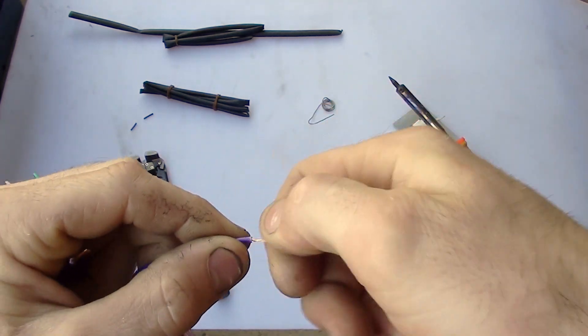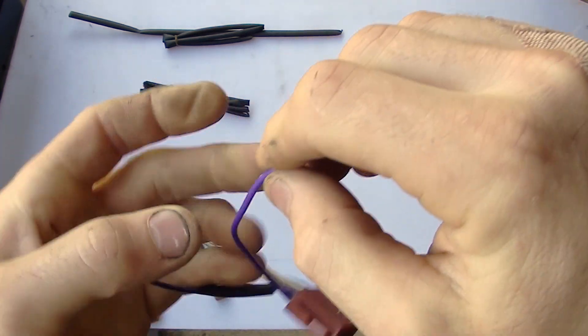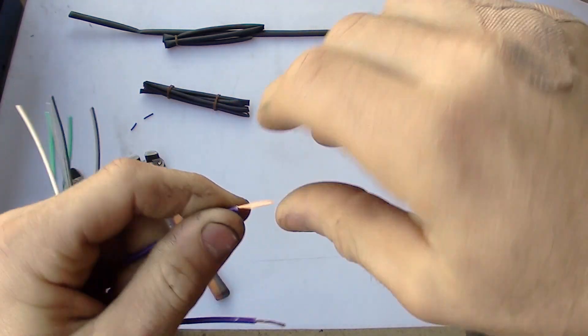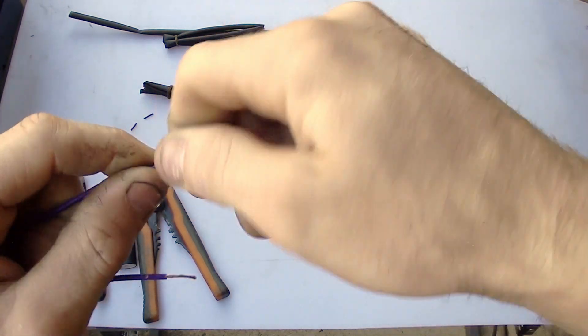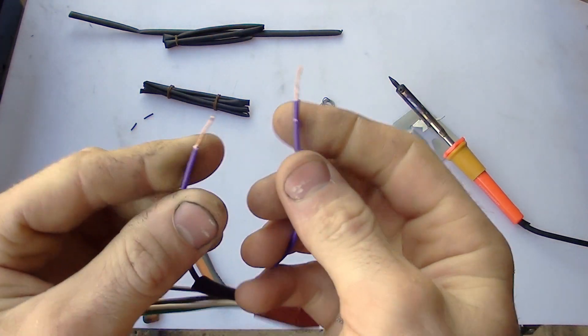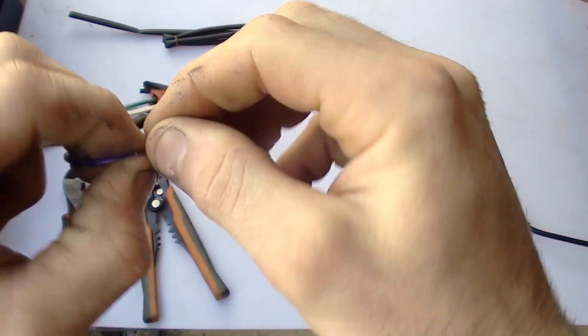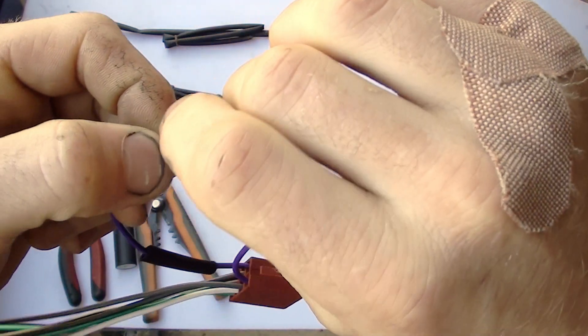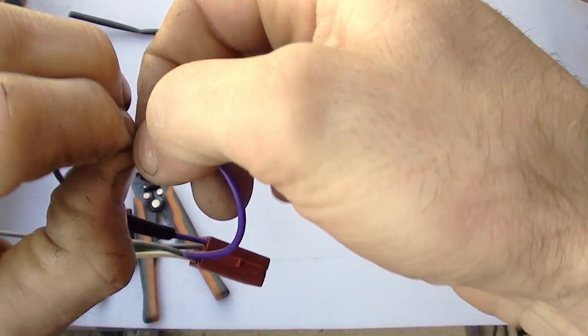Now we'll just twist the two ends until they're wound together. Once that's done about halfway and then you just twist them both together. It should end up looking something like that.